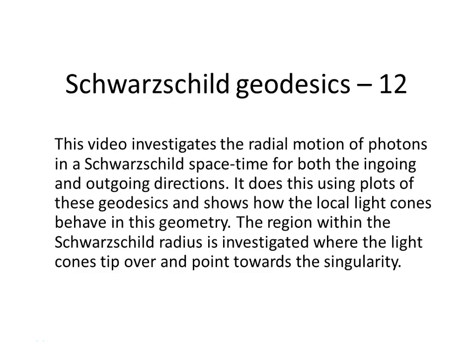This video investigates the radial motion of photons in a Schwarzschild spacetime for both the ingoing and outgoing directions. It uses plots of these geodesics to show how the local light cones behave in this geometry, and investigates the region within the Schwarzschild radius where the light cones tip over and point towards the singularity.